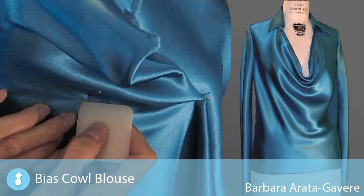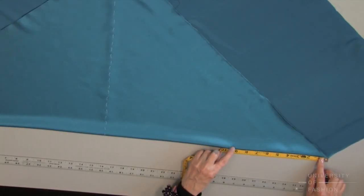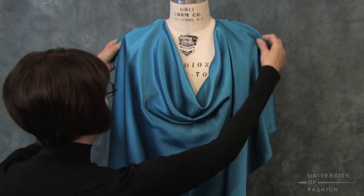Learn how to master the bias cut by draping this beautiful blouse out of silk charmeuse. You'll learn how to prepare your fabric and then how to create a deep plunging cowl neckline.